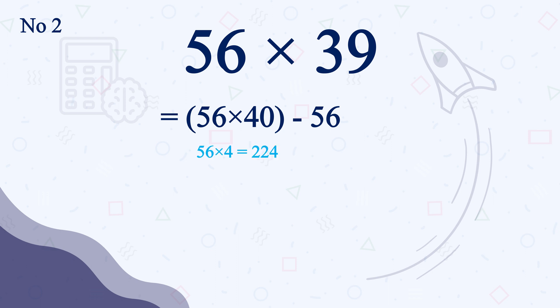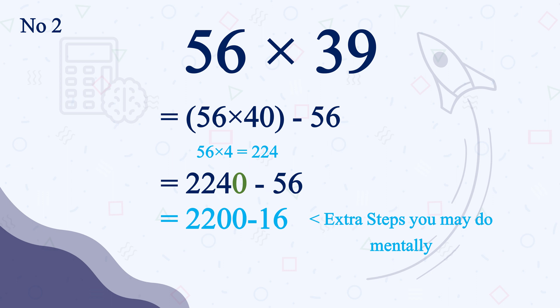4 times of 56 is 224. So it will be 2240 minus 56 or 2200 minus 16 or 2100 and 84. Very easy and very fast.